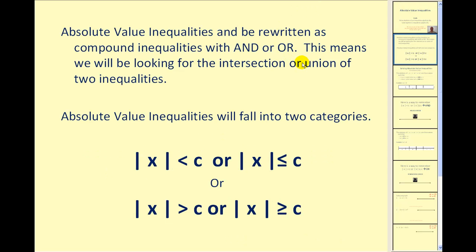Absolute value inequalities can be rewritten as compound inequalities with AND or OR. This means we will be looking for either the intersection or the union of two inequalities. Absolute value inequalities fall into two basic categories: the first where we have the absolute value less than or less than or equal to a positive value of C, and the second where the absolute value is greater than or greater than or equal to a positive value of C.